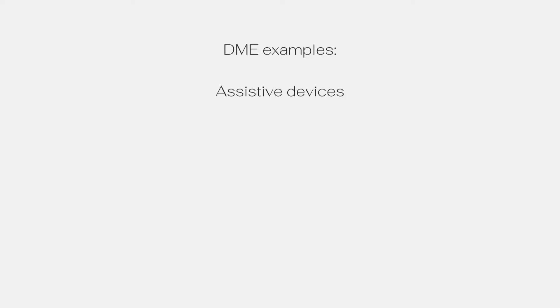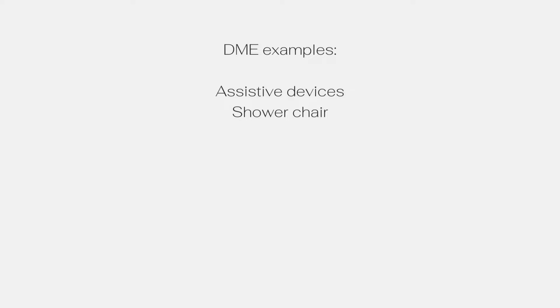Next is DME needs. DME stands for Durable Medical Equipment — any medical equipment. Common DME needs include assistive devices such as canes, walkers, and wheelchairs, as well as a shower chair, though shower chairs are not covered by insurance and patients would pay out of pocket. Other common DMEs are nebulizers for at-home treatments and home oxygen. Home oxygen can take a few days to get set up and delivered, so it's important to start arranging that early. Your physical or occupational therapist can help evaluate which DMEs your patient needs.